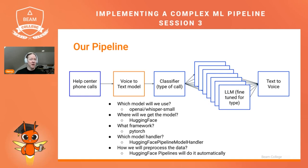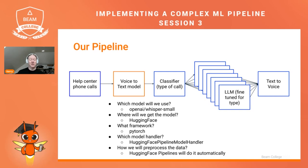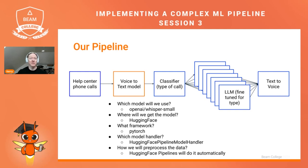How will we preprocess the data? We've got that file being turned into text, but the length is longer than the context window of the Whisper small model. How will we chunk the data or assemble a longer audio sample into one piece of text? Luckily, the HuggingFace pipelines implementation can handle all of that for us — under the covers it does the chunking and encoding, so we can basically provide only the data and some basic arguments and we'll get text from the WAV files.